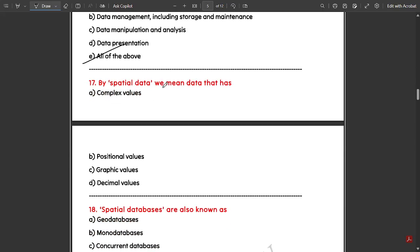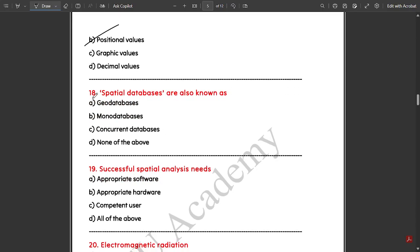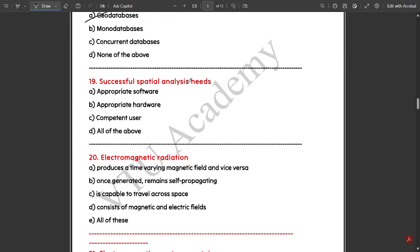By spatial data, we mean data that has positional values. Spatial databases are also known as geo databases.